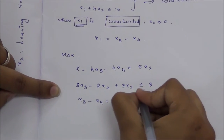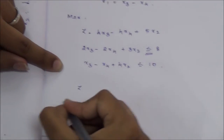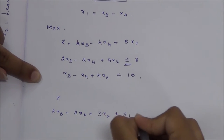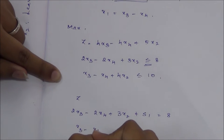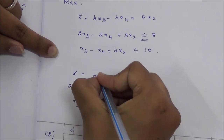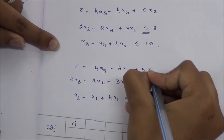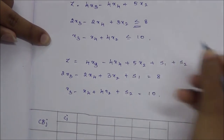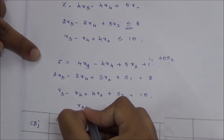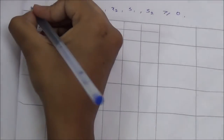Since this is a maximization problem and the constraints are less than or equal to, we add slack variables to convert them to equalities. The constraints become: 2x3 minus 2x4 plus 3x2 plus s1 = 8, and x3 minus x4 plus 4x2 plus s2 = 10. In the objective function it will be 4x3 minus 4x4 plus 5x2 plus 0·s1 plus 0·s2. The non-negative variables are x3, x4, x2, s1, s2 ≥ 0. This is the first iteration.